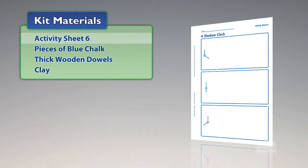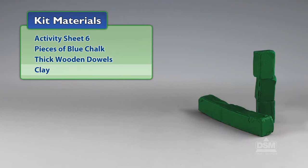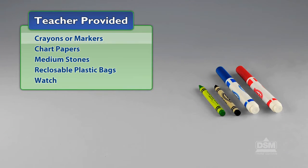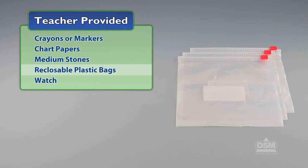You will need the following materials from the kit: Activity Sheet 6, pieces of large blue chalk, thick wooden dowels, and clay. You will also need to provide crayons or markers, chart papers, medium stones, reclosable plastic bags, and a watch.